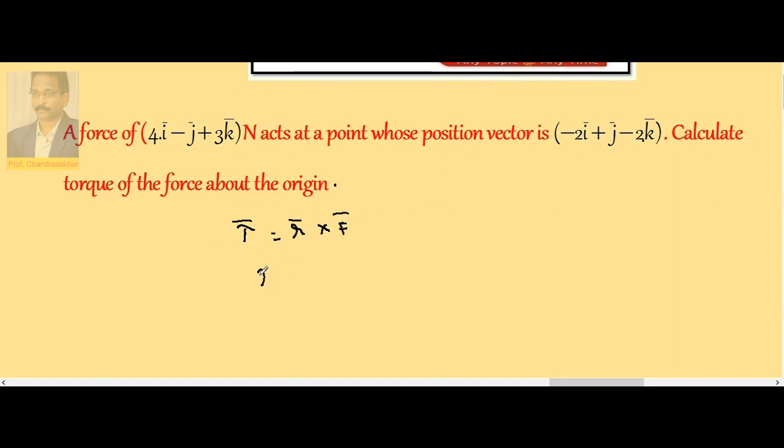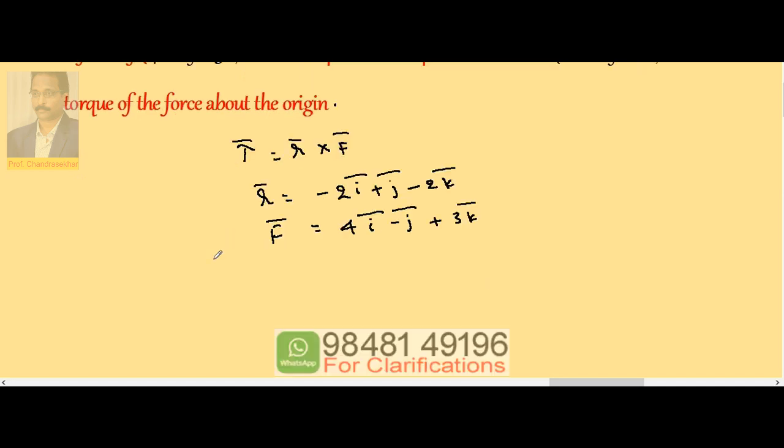r is the position vector and F is the force vector. r is given as -2î + ĵ - 2k̂ and F is given as 4î - ĵ + 3k̂. Now to find τ, let us consider the magnitude of r × F.